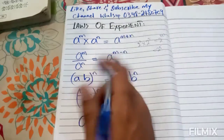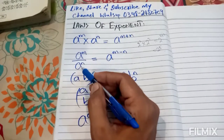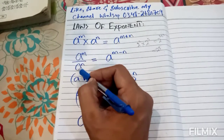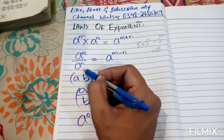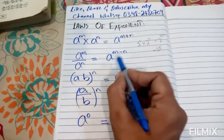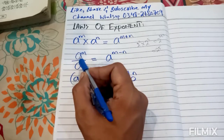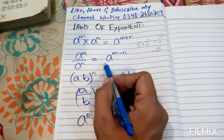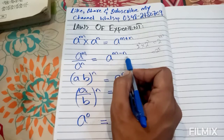And in the same way, when we have two bases the same in a product the powers will be added. For the division rule, a to the power m divided by a to the power n is equal to a to the power m minus n — the powers are subtracted.